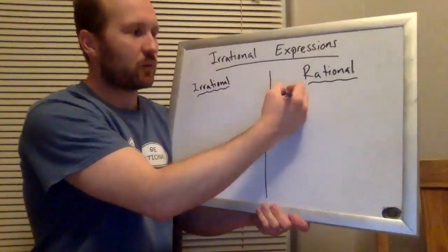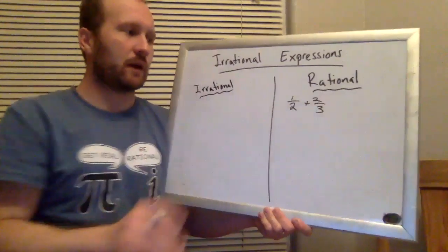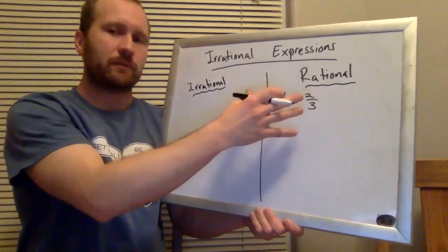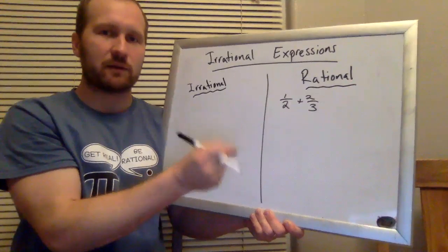So if I had something like one half plus two-thirds, right, I don't have to know exactly what that is. It's going to be rational. Any two rational numbers will combine to make another rational number.